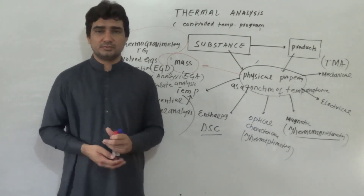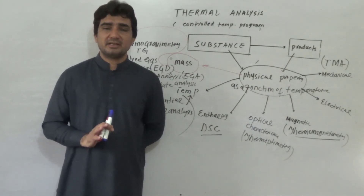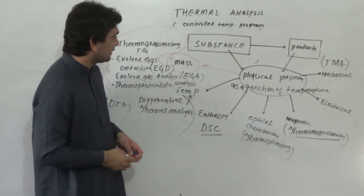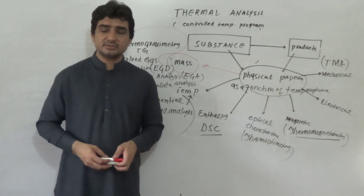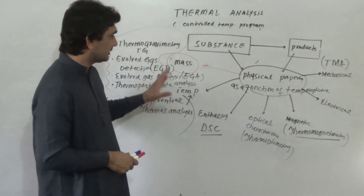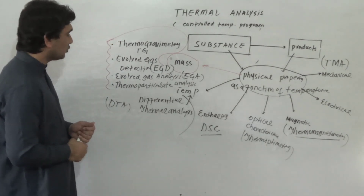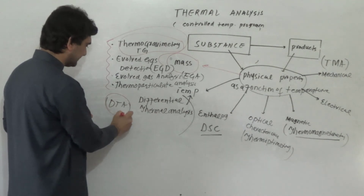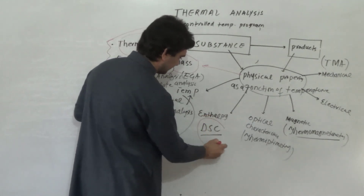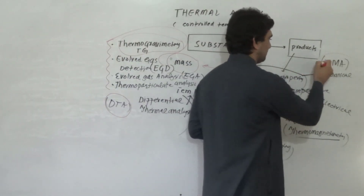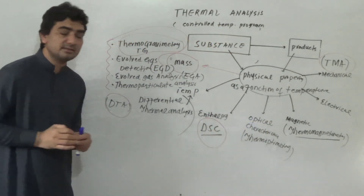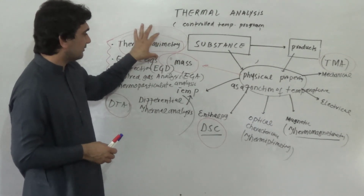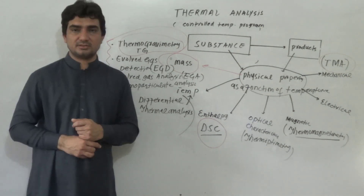Thermal analysis is widely used. The most widely analyzed materials are inorganic materials, followed by high molecular mass polymers, metals, metal oxides, and organic materials. The most widely used techniques are thermogravimetry and differential thermal analysis, followed by differential scanning calorimetry and thermomechanical analysis. In our next lecture we will see how thermogravimetry works and the principles on which it is based — so stay tuned, thank you.